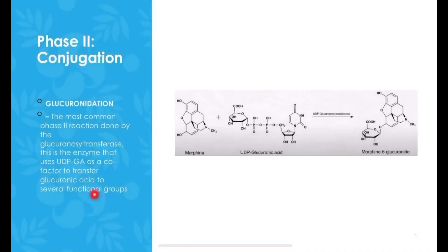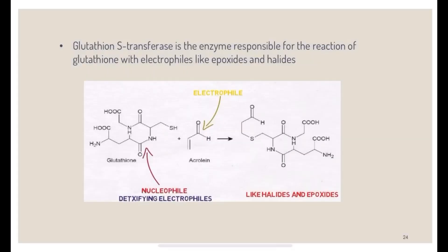In conjugation, there is glucuronidation — the most common phase 2 reaction, done by glucuronosyltransferase. This enzyme uses UDPGA as a cofactor to transfer glucuronic acid to several functional groups. Glutathione S-transferase is the enzyme responsible for the reaction of glutathione with electrophiles like epoxides and halides.